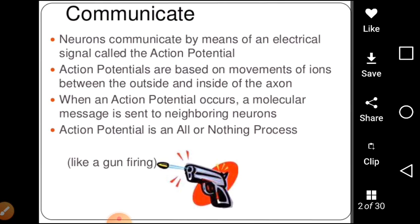Neurons communicate by means of an electrical signal. There is a need for many different neurons to communicate with each other, otherwise signals would not pass. Action potentials are based on the movement of ions between the outside and inside of the axon. The movement of ions outside and inside the axon causes the action potential.